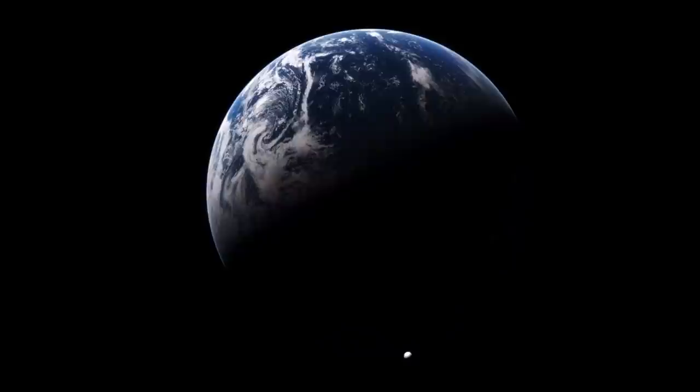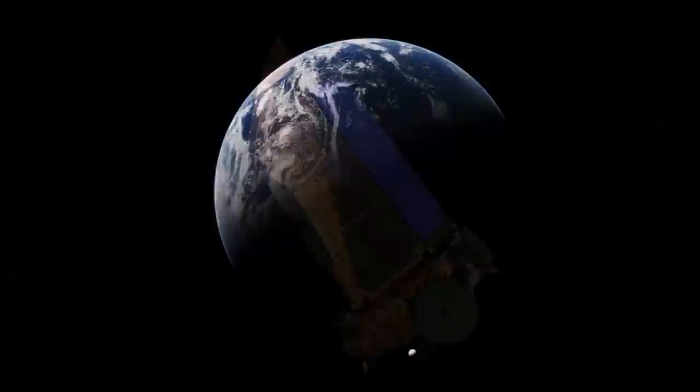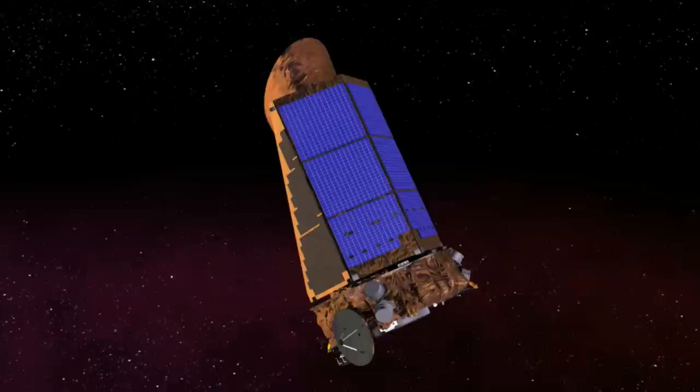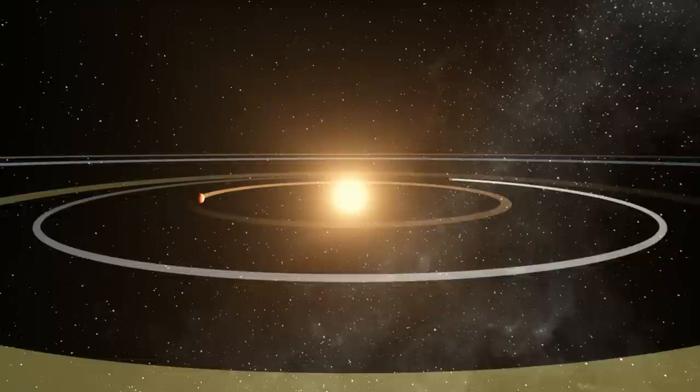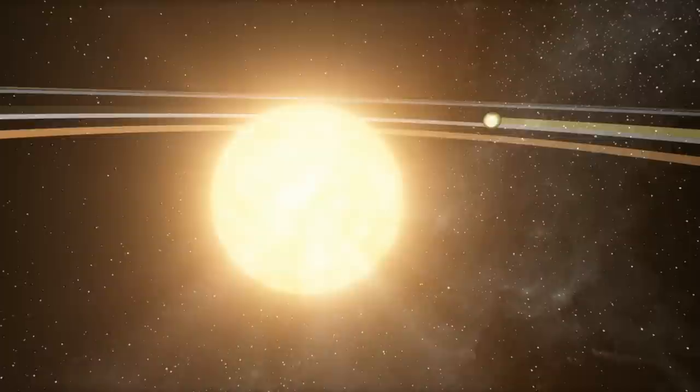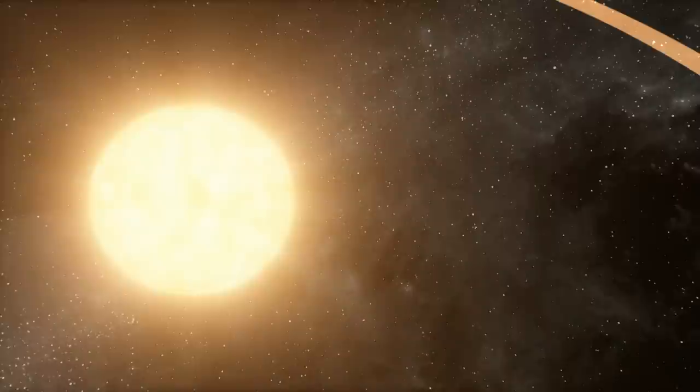There is one other solar system that may well have what it takes. The Kepler Space Telescope has a star in its sights that is well beyond our solar neighborhood. Kepler-62 is considered to be sun-like. It weighs in at sixty-nine percent of the mass of our sun, with a radius of sixty-four percent.